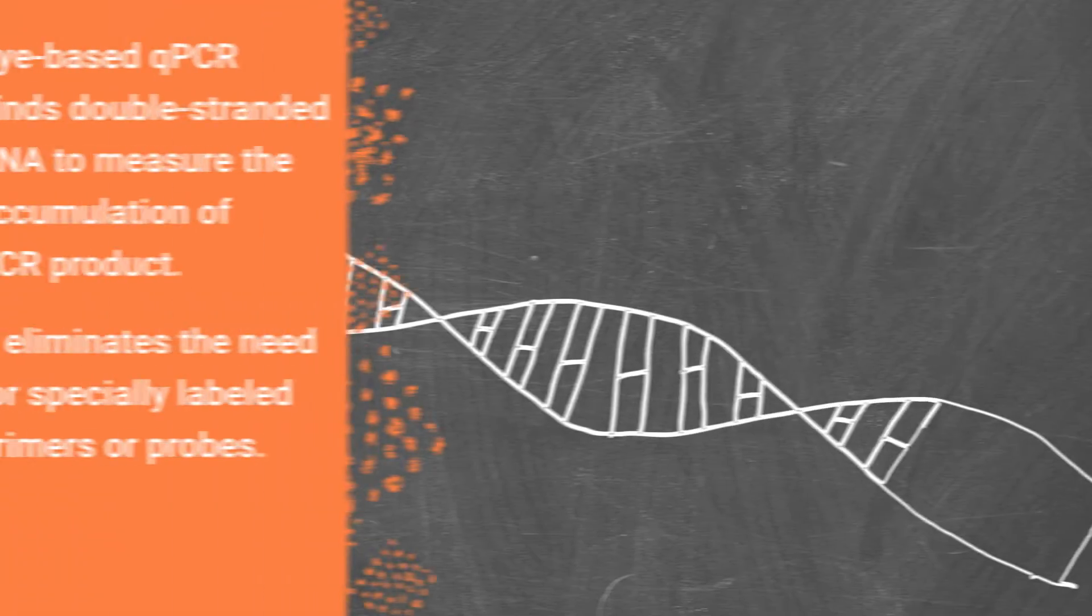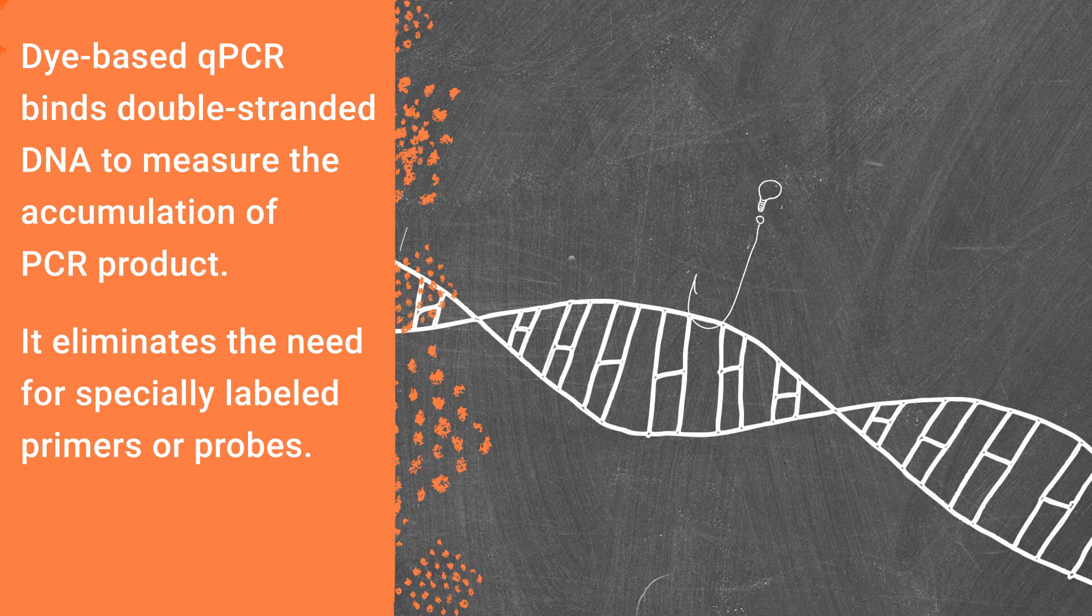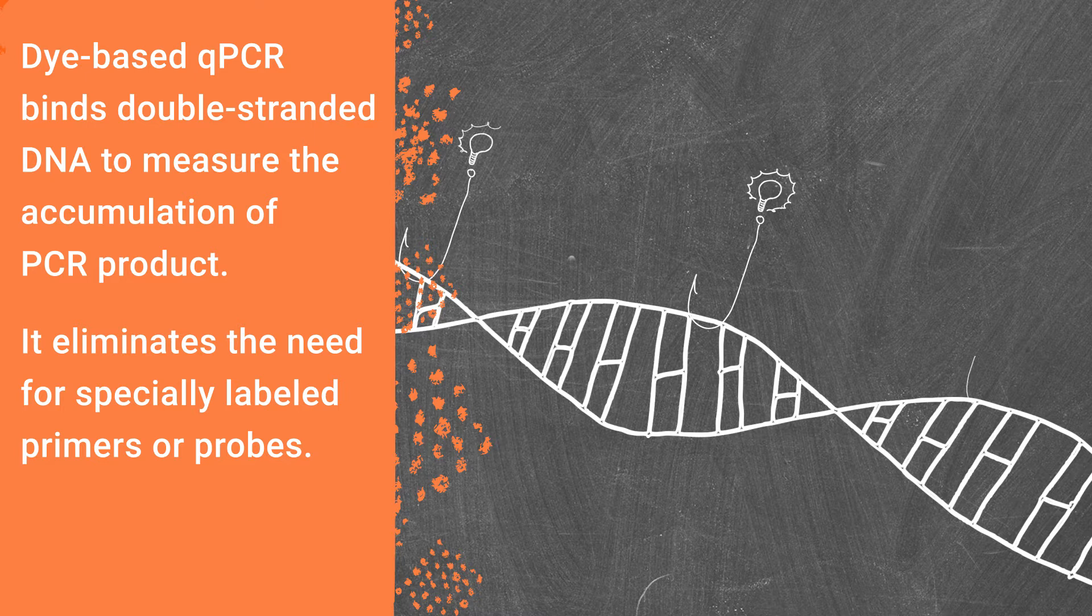Dye-based qPCR uses fluorescent dyes that bind double-stranded DNA to measure the accumulation of PCR product. This eliminates the need for specially labeled primers or probes, but it's less specific than probe-based.